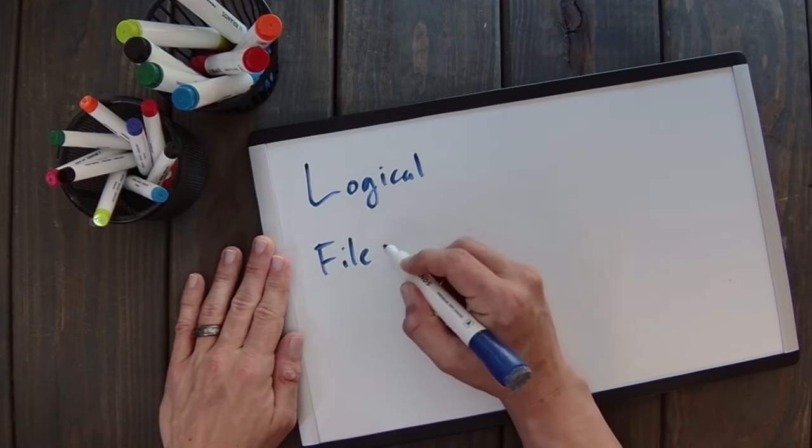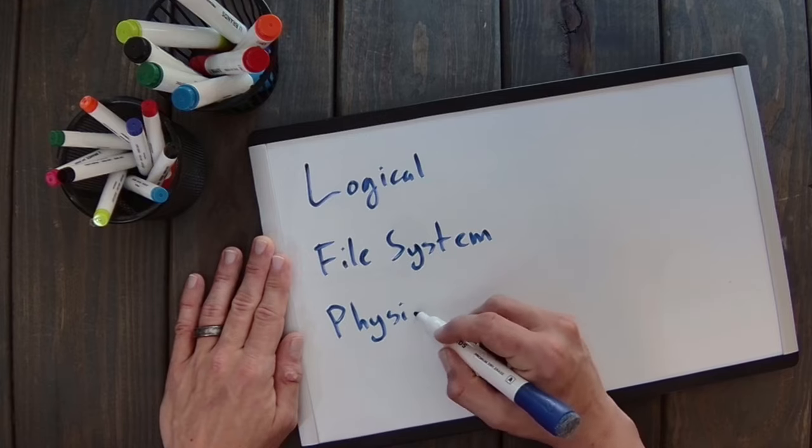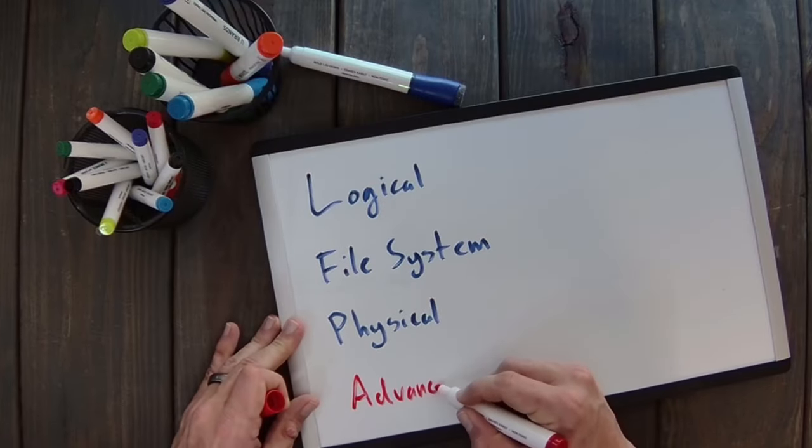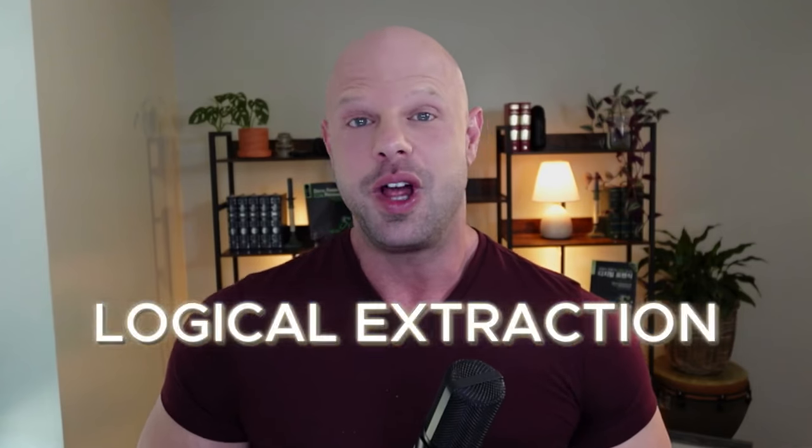So what are the different levels of extraction that can be performed against a cell phone? First, we have a logical extraction, then a file system extraction, a physical extraction, and finally an advanced file system extraction. A logical extraction is extracting the data that you can see as a normal user — it's kind of like a fancy iTunes backup. It gets all the data you can see and more, but it's not getting truly deleted data. A logical acquisition works by communicating with the phone via an API — an application programming interface — essentially a cell phone forensics app designed to talk to the phone and make it give up its data.